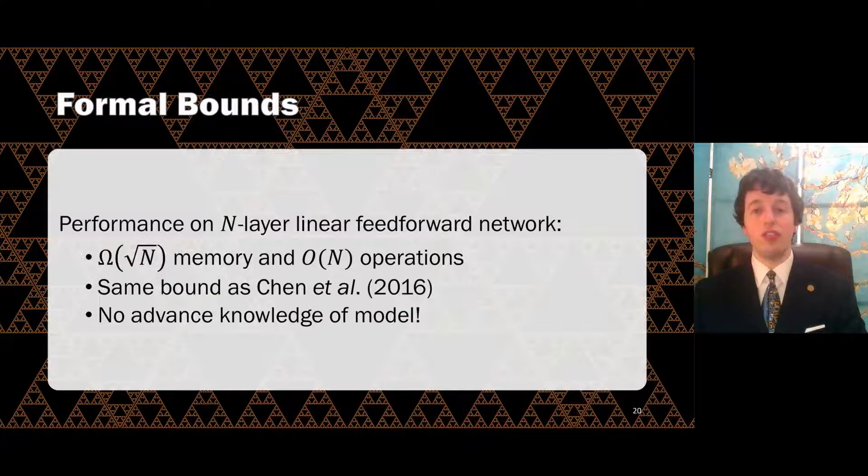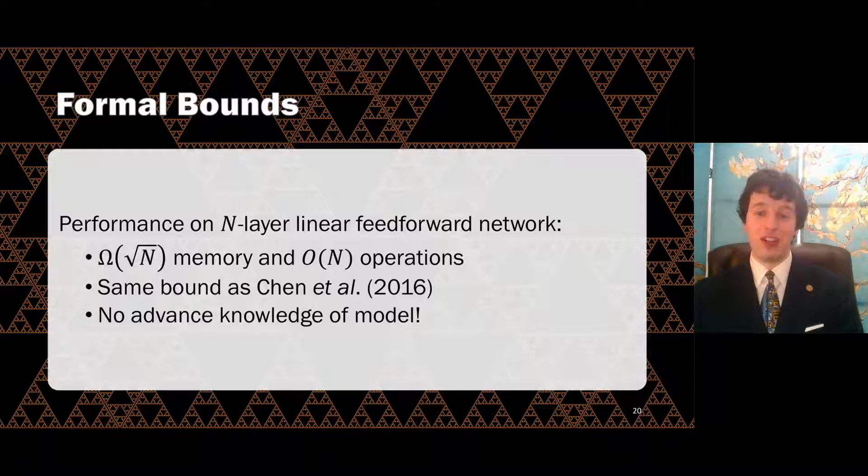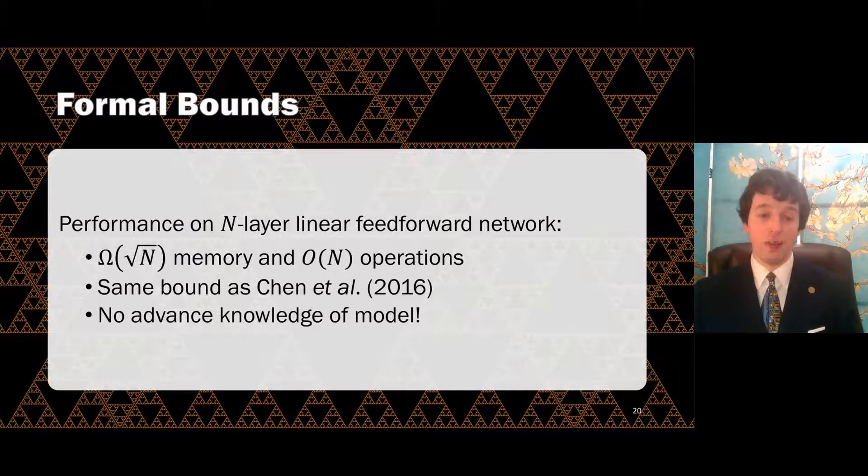Given a heuristic using cost and size, we proved that DTR can train an n-layer feedforward network in square root of n memory with a linear number of operations, which is the same performance bound as the Chen gradient checkpointing work, but without any advanced knowledge of the model.